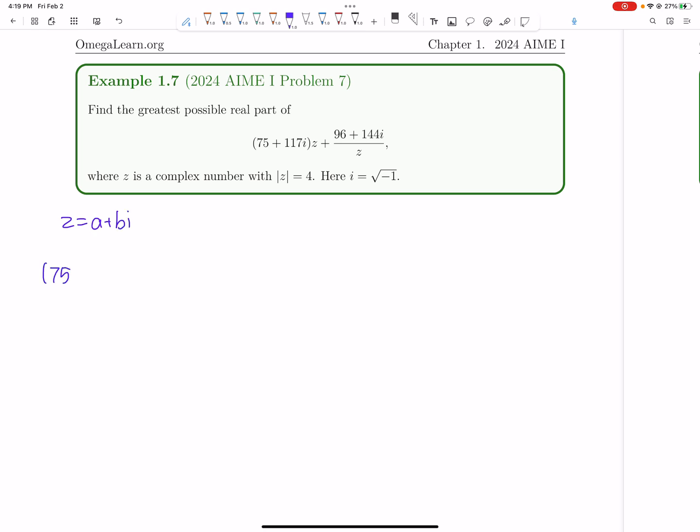So let's just say z equals a plus bi. And therefore we now have 75 plus 117i times a plus bi plus 96 plus 144i over a plus bi. So now we don't want complex numbers in the denominator, so first thing we should just do right off the bat, multiply this by a minus bi and the bottom by a minus bi.